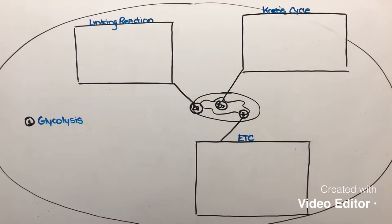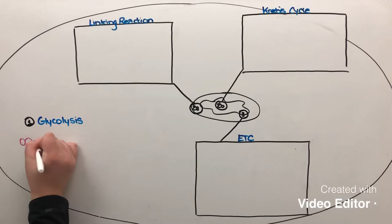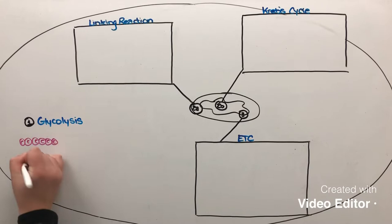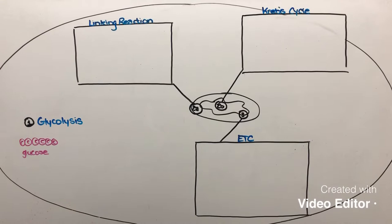Glycolysis starts with a molecule we should be familiar with — a six-carbon compound called glucose. We obviously obtain glucose by eating things. Plants, which also perform cell respiration, create their own glucose through photosynthesis. The main purpose of glycolysis is to take this glucose molecule and transform it into a molecule called pyruvate.